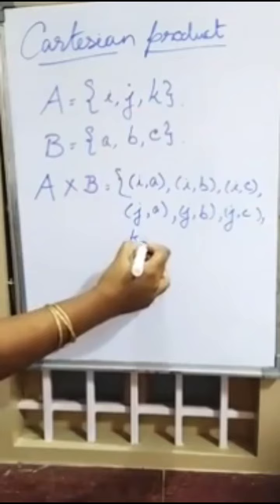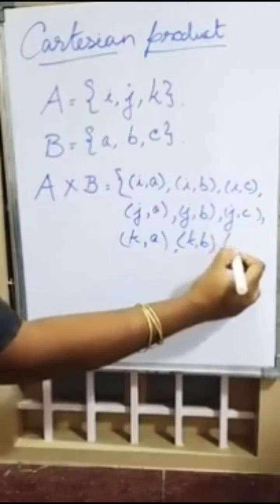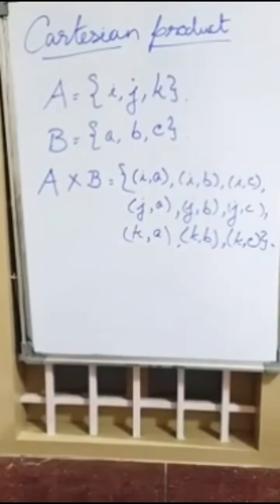Third element: K comma a, K comma b, K comma c. This is the Cartesian product of two sets. Now you can see the definition.